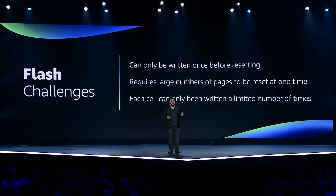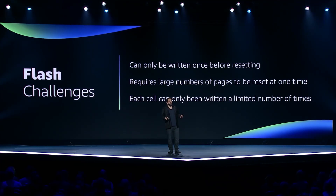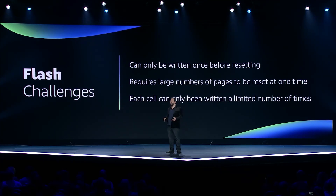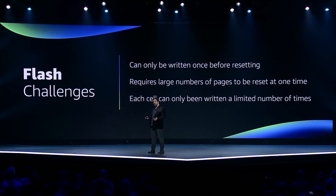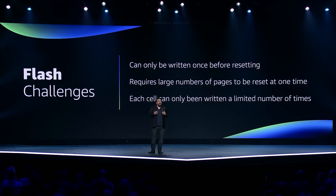When we write to Flash, we do it at the page level. A page of Flash is typically thousands of cells or bits. This is pretty typical — it's the same way we write to hard drives. But once a page is written, it can't be updated without resetting all the cells.